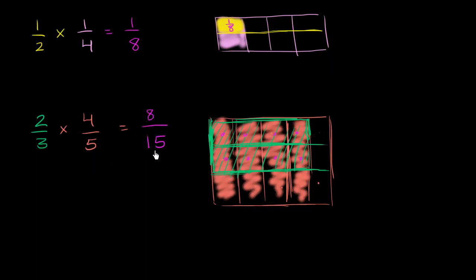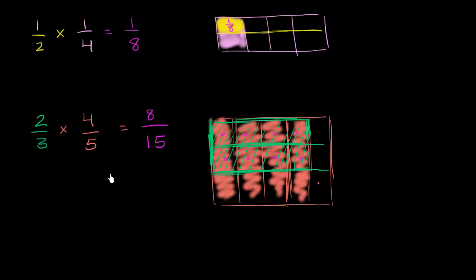And so there you have it. It should hopefully now make visual and conceptual sense that 2 thirds times 4 fifths — you can compute it by multiplying the numerators: 2 times 4 is 8, and multiplying the denominators: 3 times 5 is 15. This now makes conceptual sense as 2 thirds of 4 fifths.